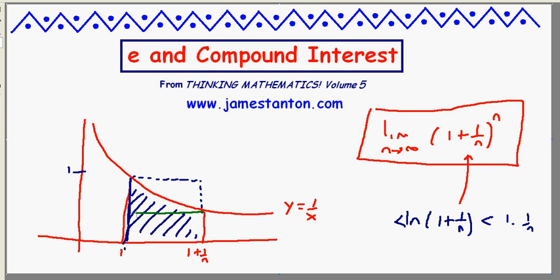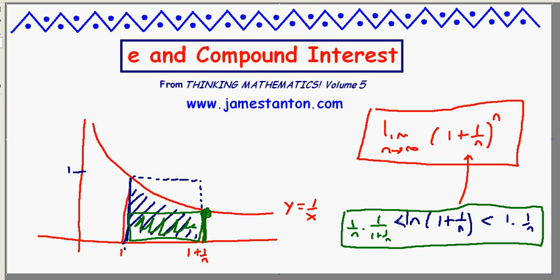At the same time, I'm going to need a different color here. It's bigger than this rectangle, which is 1 over n wide, and its height is the height of the function at this point here, 1 over 1 plus 1 over n. So we have a little relation.